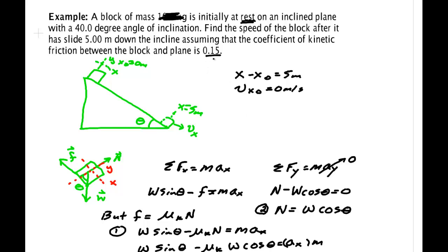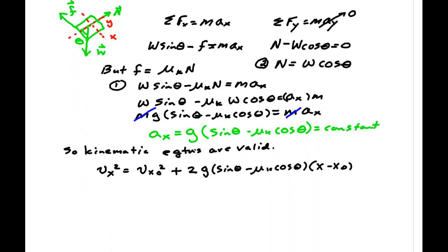And we need to know mu k is 0.15. So we go down and put those into our things here. V x is the square root of 2 times 9.8 meters per second squared sine theta minus 0.15 cosine 40 times 5 meters.